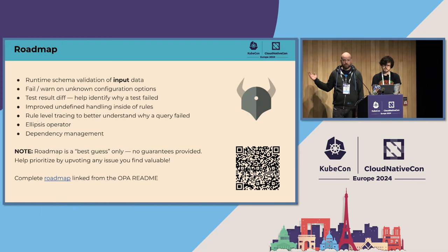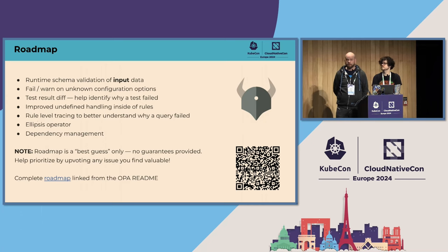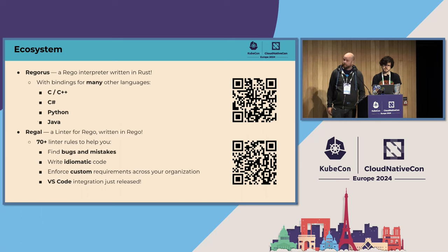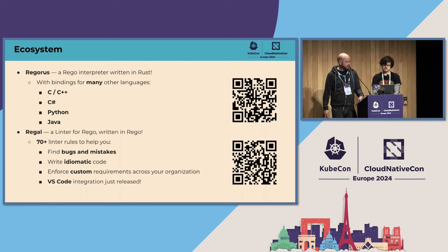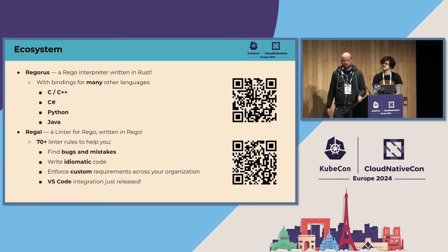As with any roadmap, this is a best guess — let us know if you feel strongly about anything. Two cool projects in the ecosystem right now: Rigorous from Microsoft, which is OPA written in Rust with most things covered and bindings to many languages. And Regal, a linter for Rego which is itself written in Rego — a cool project I've been involved in, so I'm a bit biased.